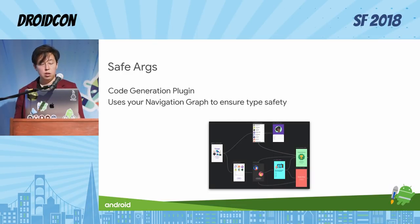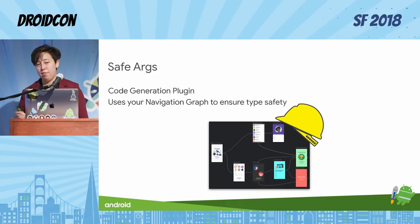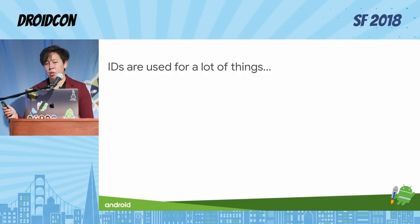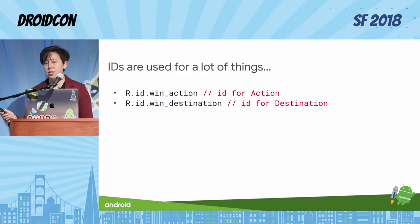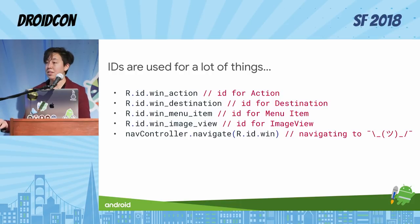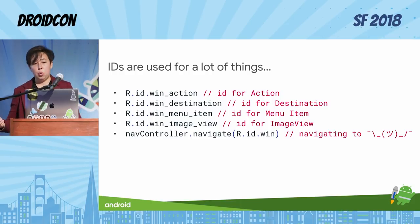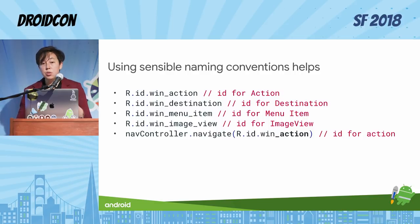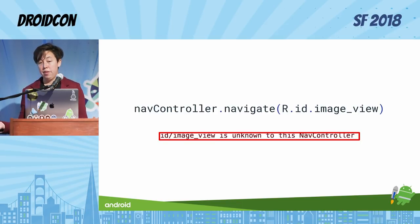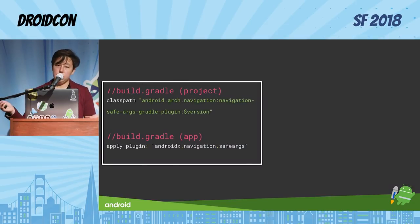The SafeArgs plugin is a code generation plugin meant to ensure type safety using your nav graph. IDs are used for a lot of things, and with the introduction of IDs for actions and destinations, there are even more IDs out there. There are also IDs for menu items and image views. So if you tell your nav controller to navigate to a given ID, you're not really quite sure where you're going. Using sensible naming conventions helps, but it still doesn't resolve the possible issue of navigating to an image view and everything blowing up in your face.